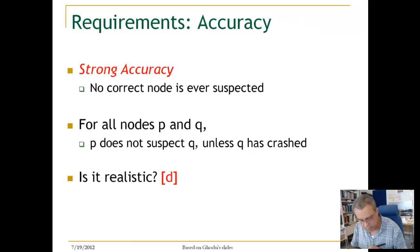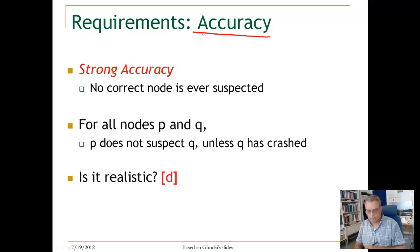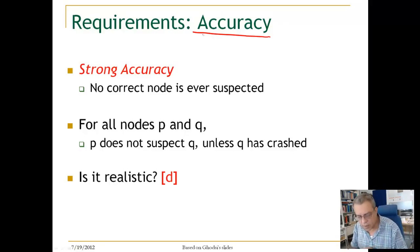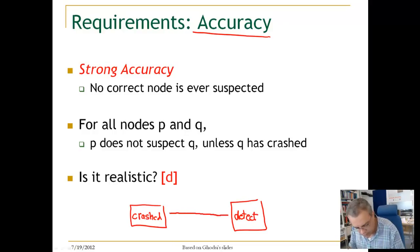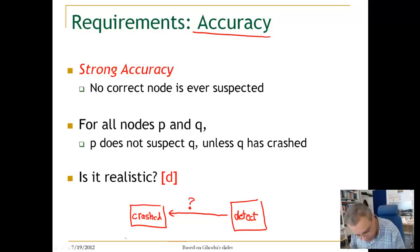We now go to the other interesting property of a failure detector: accuracy. Accuracy is talking about how accurate our detection is. The question is: if I detect that some node has crashed, did it really crash? So if I detect a node, how accurate is that detection?